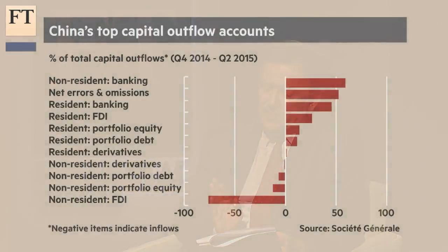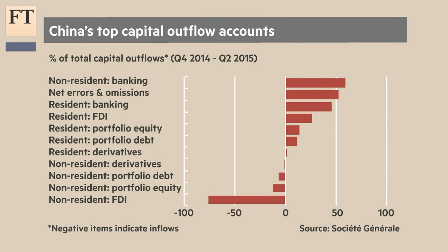Very quickly, if we take a look at the final chart on China's top capital outflows, we can see that non-resident banking is the largest factor, which would basically back up the suggestion that this is primarily about households moving their money overseas rather than about big deliberate moves by the central bank.